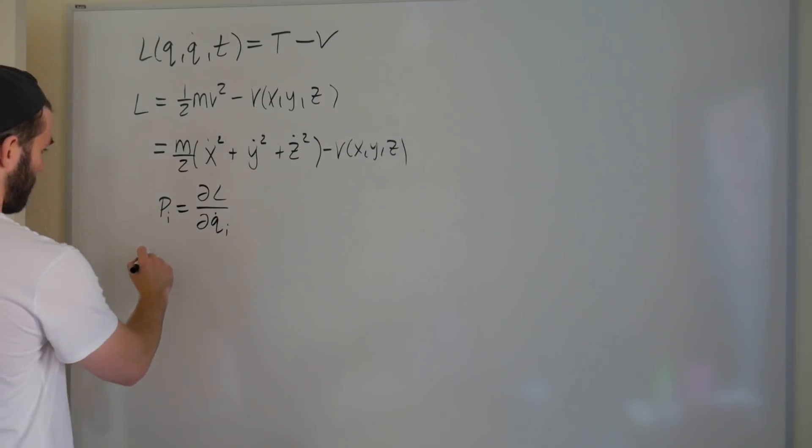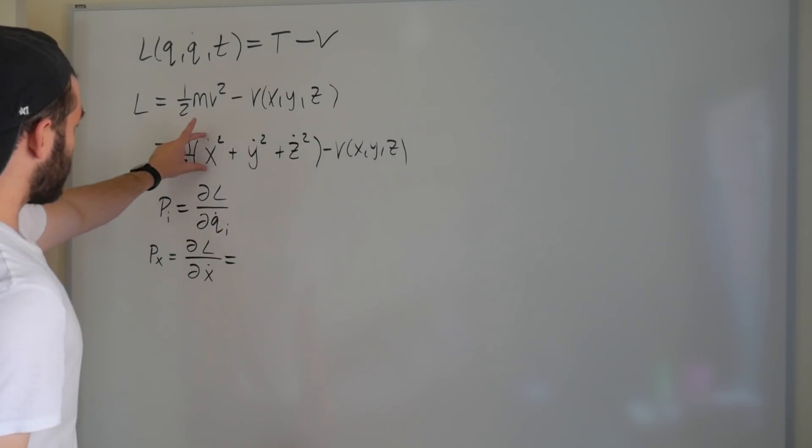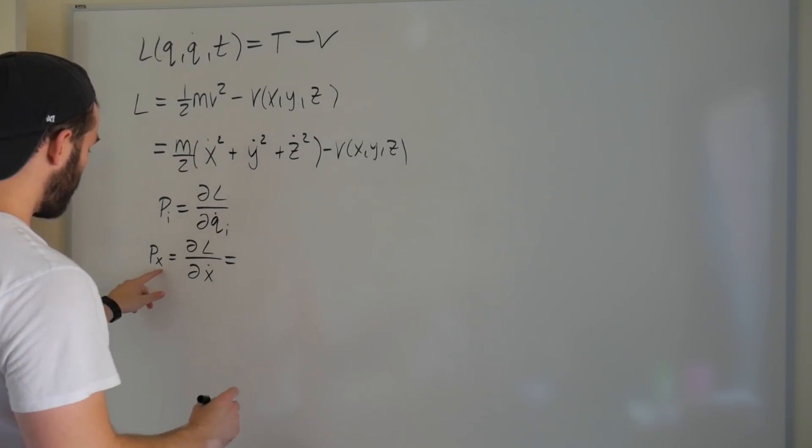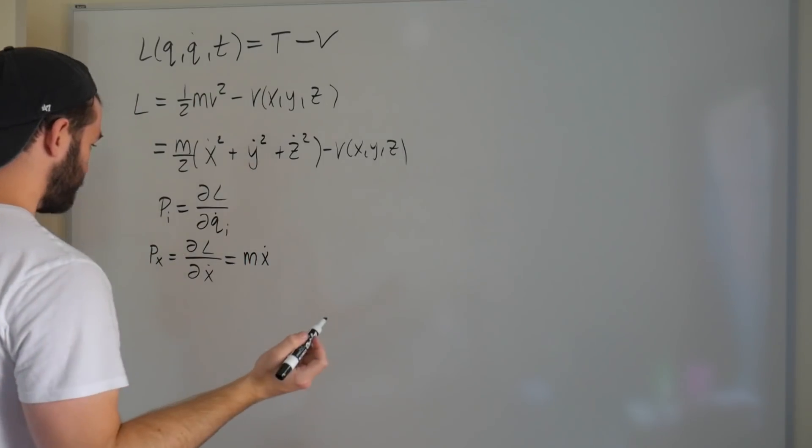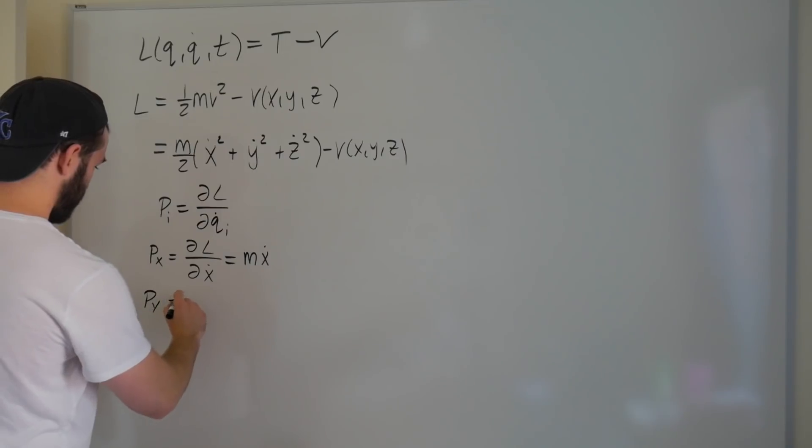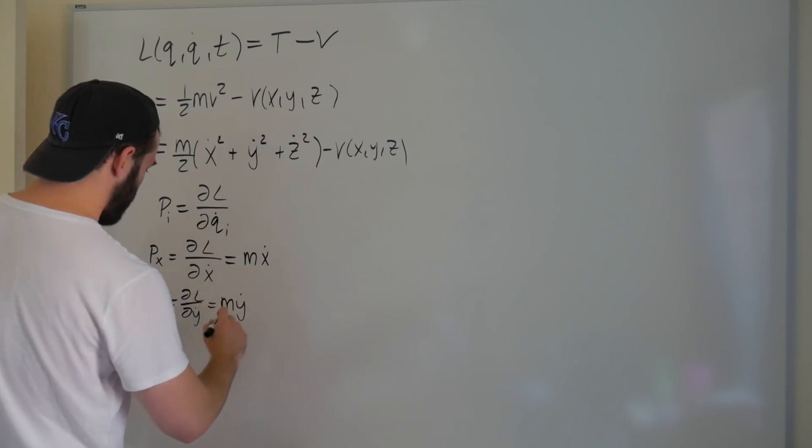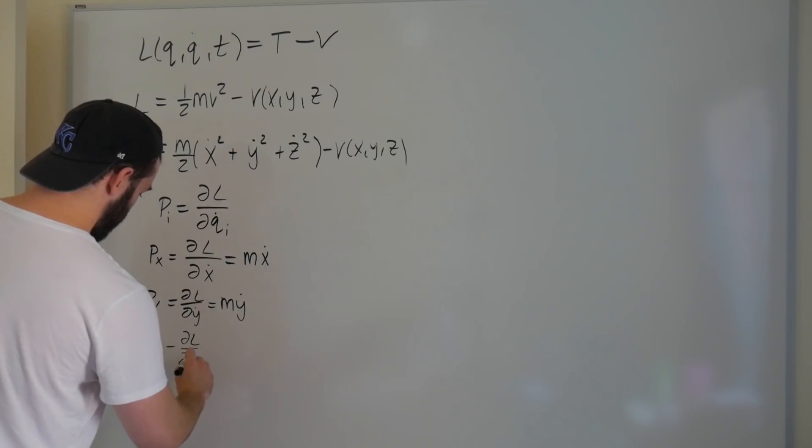So that means that px, for example, is equal to the derivative of the Lagrangian with respect to x dot. And that means that if we're looking at this as its own variable, the 2 comes down, it's just power rule. That makes the x component of the generalized momentum equal to m x dot. The y component is equal to dL dy dot, which is equal to m y dot.